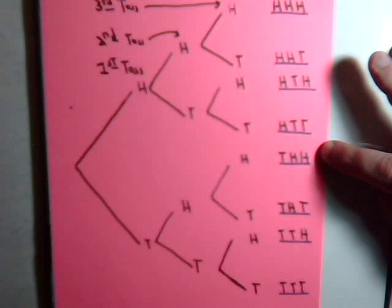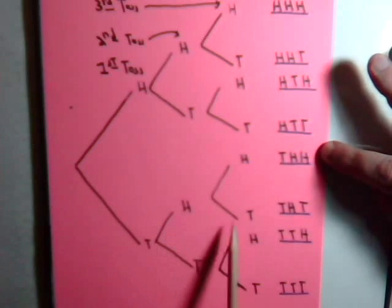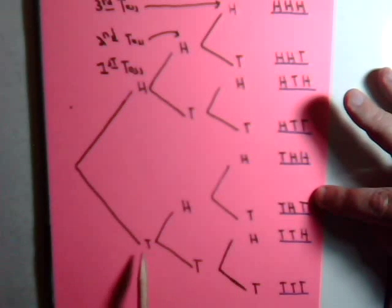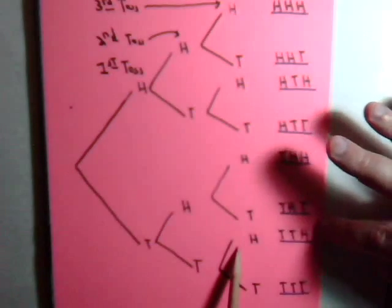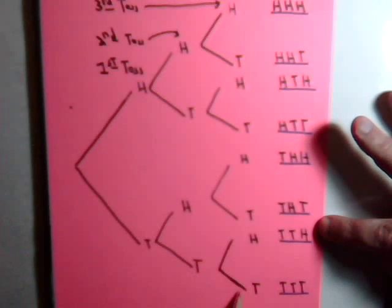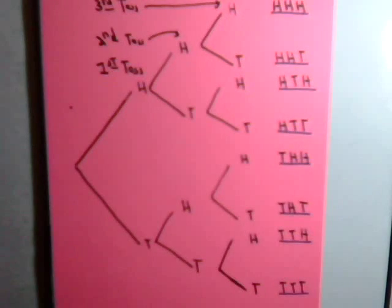Or we could have tails, head, tails. Or we could have tails, tails, head. Or tails, tails, tails. So those are the eight results then that we can expect to find when we toss a coin either taking heads or tails as a possibility. Those are the possibilities there.